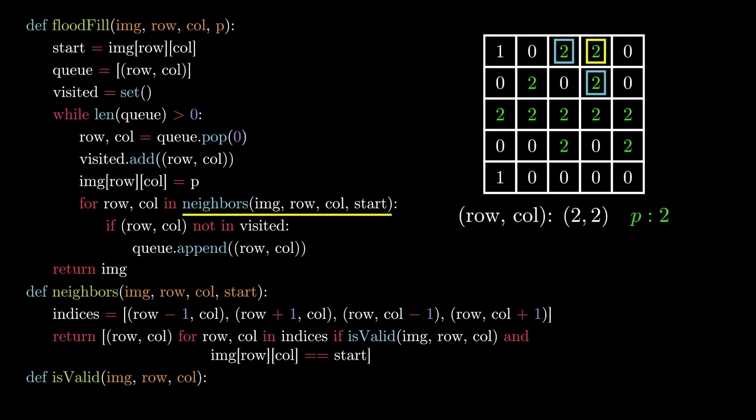Checking whether a pixel is valid is probably the most annoying part of this problem, but it can be done by making sure that both the row and column are non-negative, the row index is less than the total number of rows in the grid.